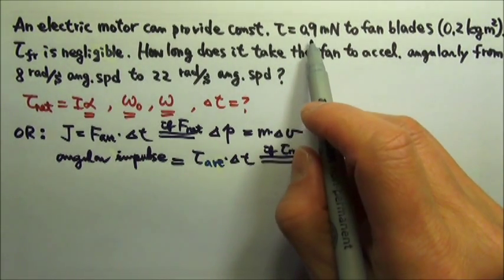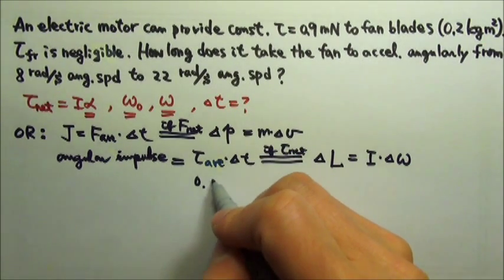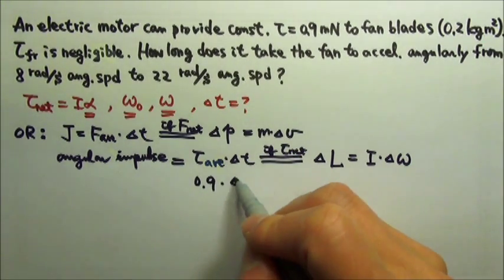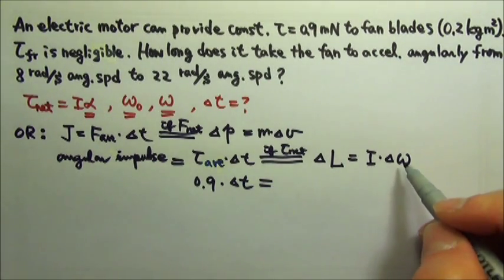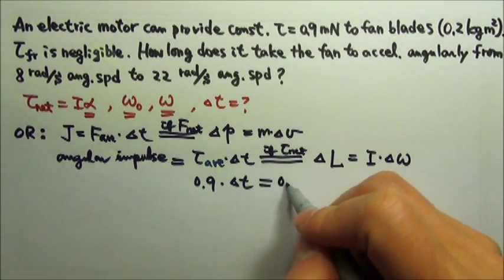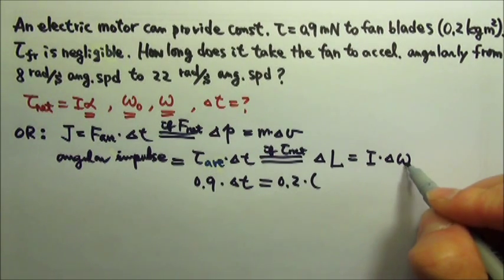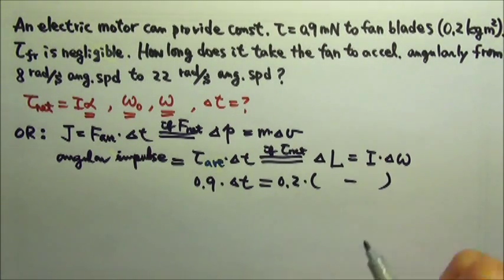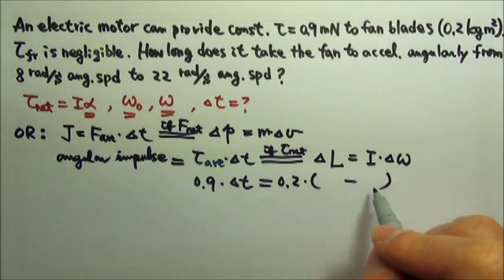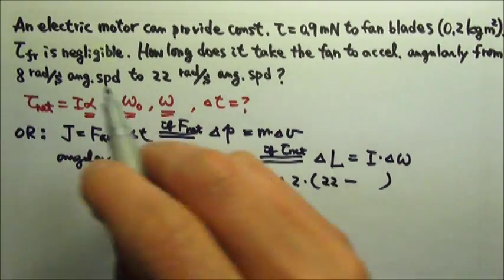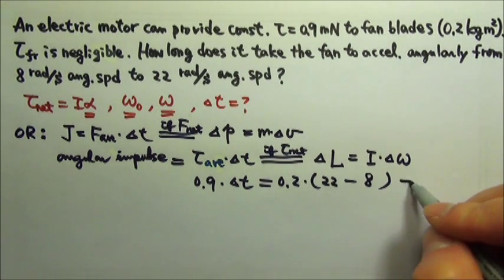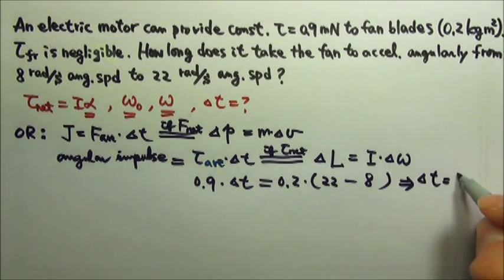So we have the constant torque, 0.9. The time, we don't know. That's what we're looking for. And this equals to the I times delta omega. The I, the rotational inertia, is 0.2. Delta omega is the final angular speed minus the initial. The final angular speed is 22. The initial is 8. So this will give us delta t is 3.11 seconds.